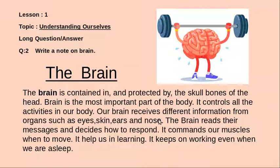Our brain receives different information from all the organs. We have sense organs — because of these sense organs, we collect the data from our surroundings. We have sense organs such as eyes, ears, skin, and nose. So the brain receives different information from our surroundings because of these organs.